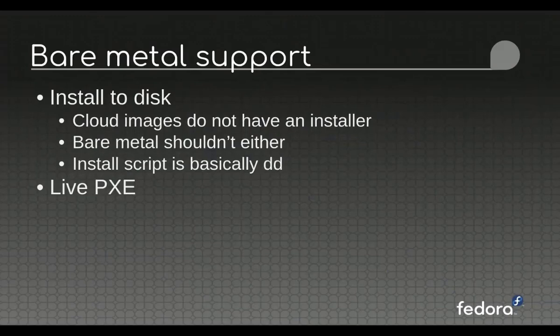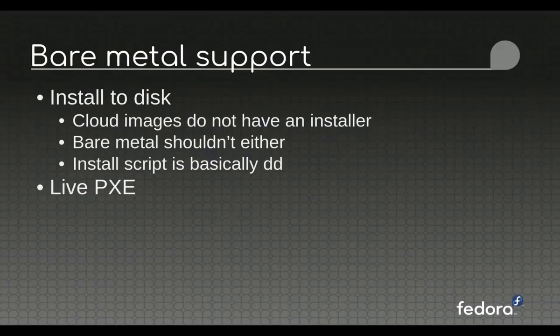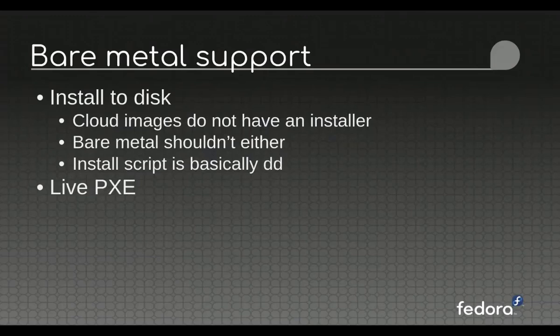On the bare metal side, we think of bare metal as an extension of cloud images. On the cloud you have an AMI ID and just launch the image you want — there's no installer. On the bare metal side, there shouldn't really be an installer either. The way you get Fedora CoreOS onto disk is via a script that downloads a monolithic disk image and DDs it to disk. We will eventually support LivePXE as well, so you can network boot a Fedora CoreOS image and run it entirely from RAM. People do this on Container Linux today as a way of running container hosts in production, but we don't support it yet in the current preview release.